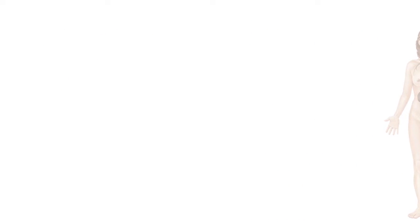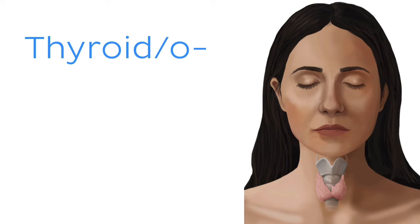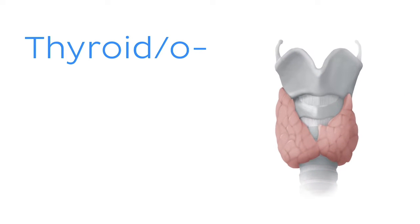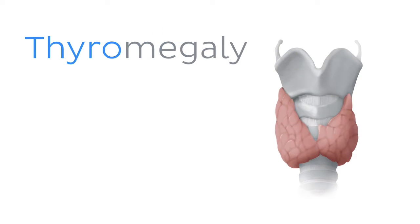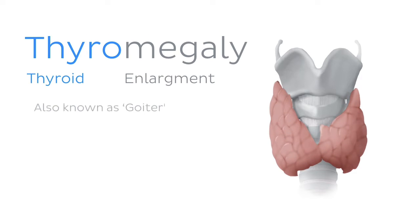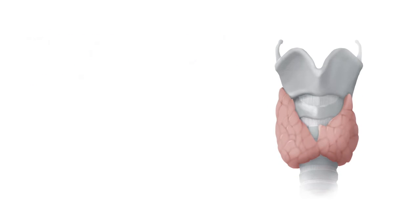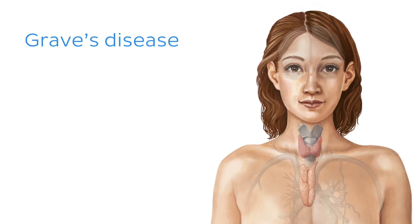Now moving on, we have the roots thyre or thyro, and thyroid or thyroido, which are associated with the thyroid gland. For example, thyromegaly means enlargement of the thyroid gland, also known as goiter. Now when it comes to medical conditions, the thyroid gland is particularly fascinating. For example, we have Graves' disease, which is an autoimmune disorder that causes overactivity of the thyroid gland. That, in turn, can cause inflammation of various tissues around the body, resulting in conditions like exophthalmos.